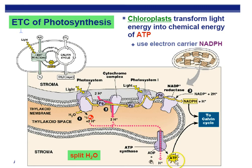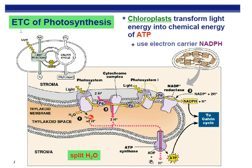You won't make as much ATP as in the electron transport chain of cell respiration, but you'll make some for the Calvin cycle. Photosystem 2 is all about making ATP — and it's where we first bust apart water. Remember, in cell respiration we got electrons from sugar; in photosynthesis, electrons come from water. Now that the electrons have lost energy, we kick them up again using light captured by the P700 chlorophyll in photosystem 1. That electron's energy is used to reduce NADP and form NADPH.